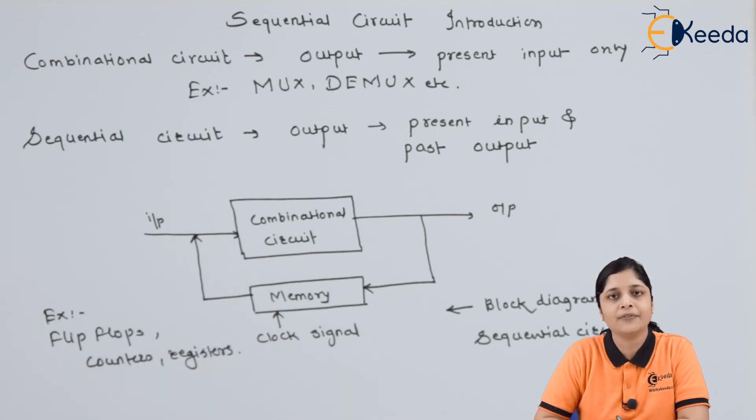So, in short, if anywhere sequential circuit is there, then inside the sequential circuit, the output depends on whatever the input we are giving at the present and the past output we have got from the previous results. This is all about the introduction to sequential circuit.